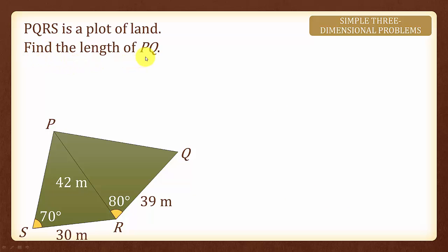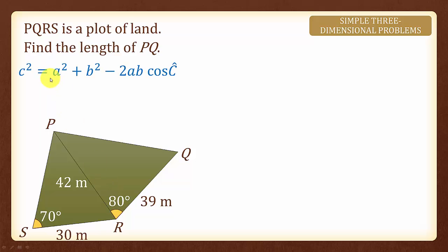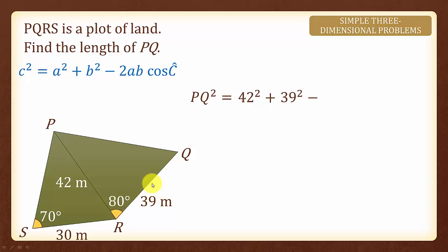Next, we are asked to find the length of PQ. We notice that we have two given lengths and an included angle, and therefore we shall use the cosine rule. The length here will be the length that is opposite the included angle, and hence C squared equals to PQ squared. We will have 42 squared plus 39 squared minus 2 times 42 times 39 times cosine 80.